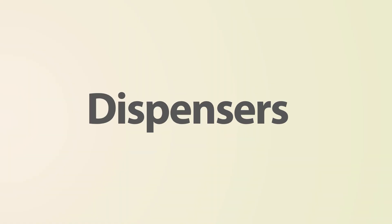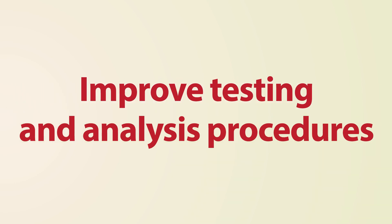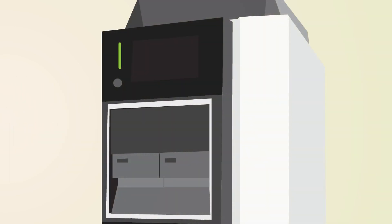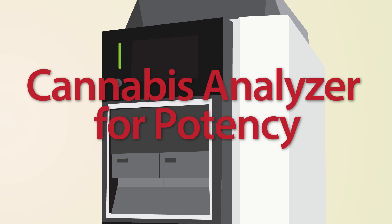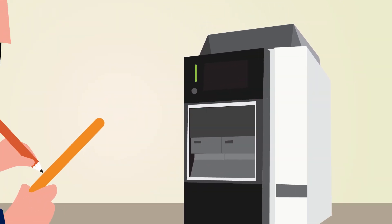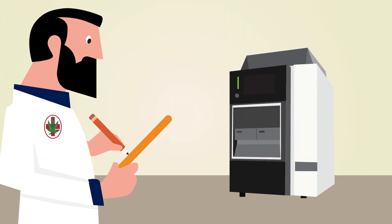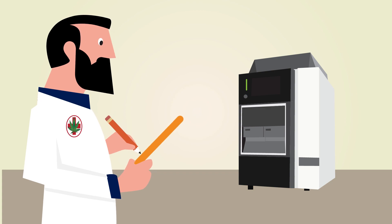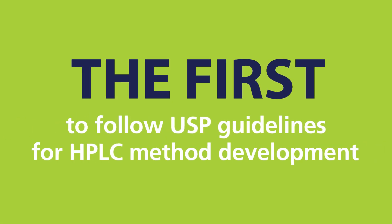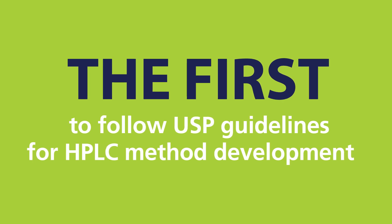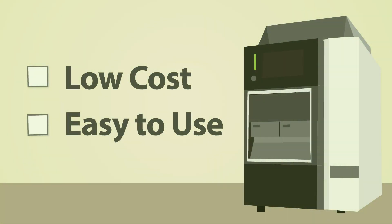That's why QC labs, growers, processors, and dispensers of medical marijuana products are looking to improve their testing and analysis procedures. And that's why Shimadzu developed the Cannabis Analyzer for Potency. It's the first testing instrument designed specifically for the needs of cannabis labs, and the first to follow the rigorous USP guidelines for HPLC method development. With low initial investment and operation costs, it's the perfect solution for potency analysis.